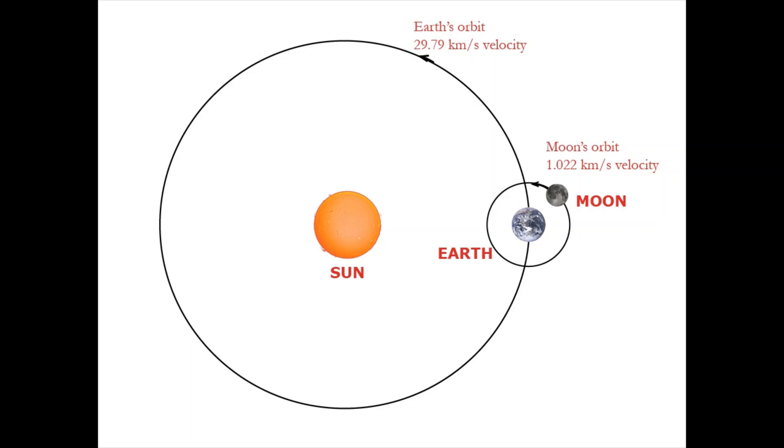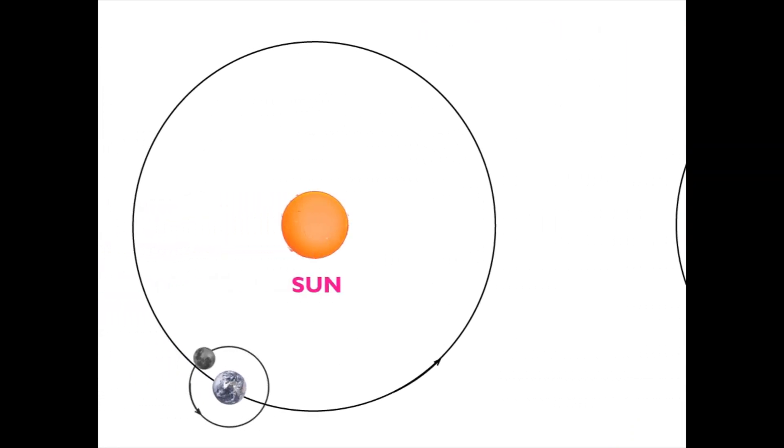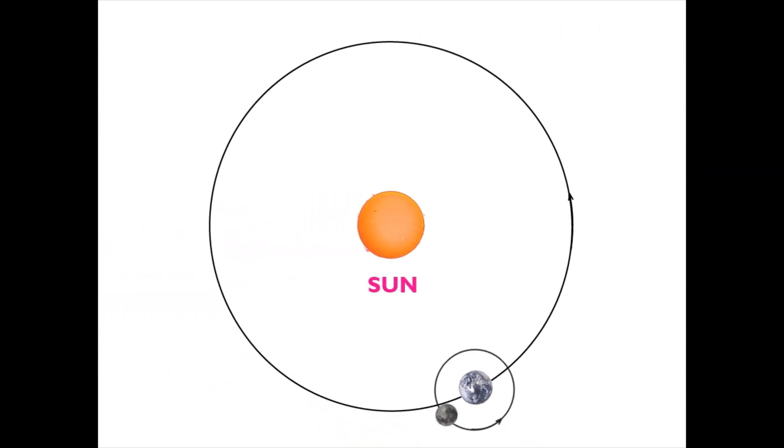The mean velocity of the orbit is 1.022 km per second. The Earth and the Moon, together as a satellite system called the Earth-Moon system, orbit the Sun.